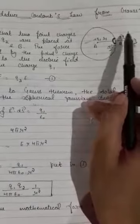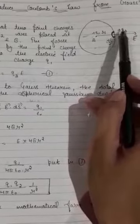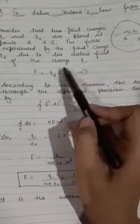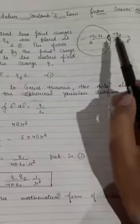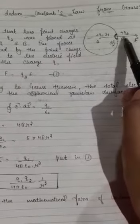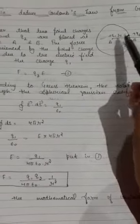As this charge is creating electric field, this charge will experience repulsive force, and that force I can write as q2*E. Just remember this thing: this charge is experiencing a force due to q1, so I can write F equals q2 into E. That is my first equation.